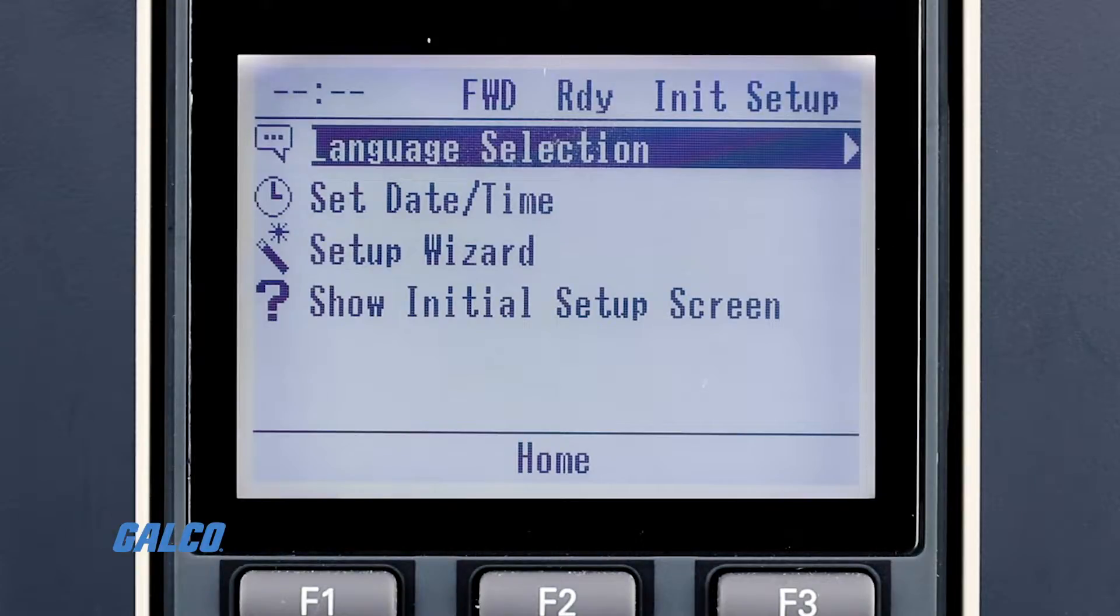The Setup Wizard should automatically display. If it did not automatically launch, you can do so by pressing the Menu button and then press the up arrow key to select initial setup.